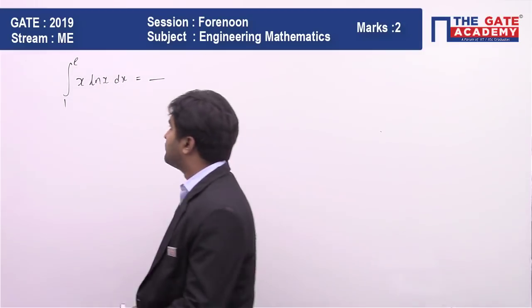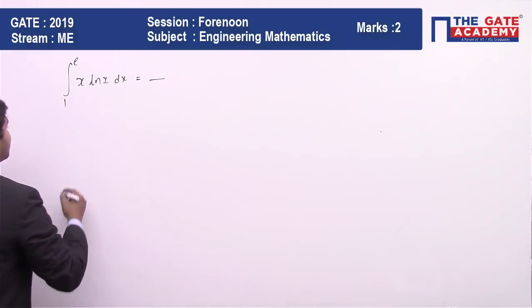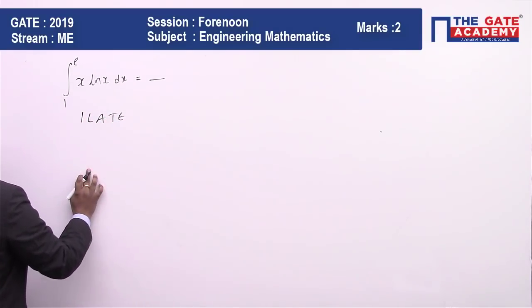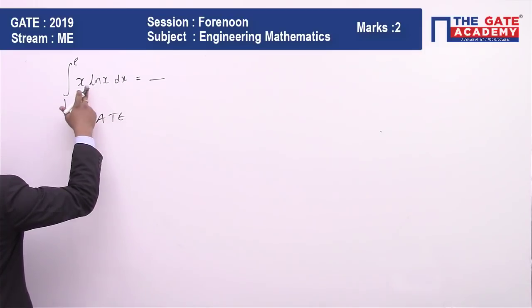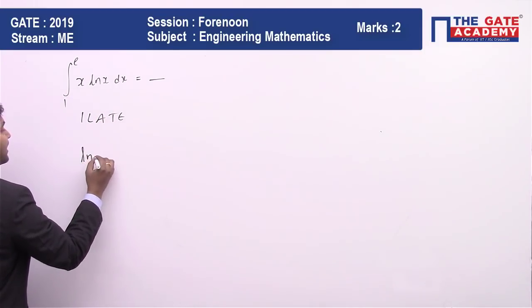We will be following the ILATE method. In ILATE, logarithm has to come first and then comes the algebraic. So let me rearrange it: ln(x) multiplied by x.